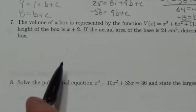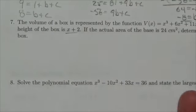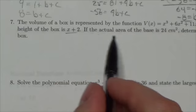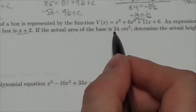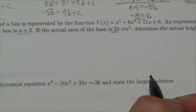Okay, an expression for the height of the box is x plus 2. So it's a fairly simple expression here. Then it says here, if the actual area of the base is 24 centimeters squared, determine the actual height of the box.